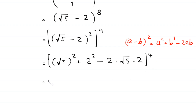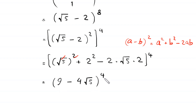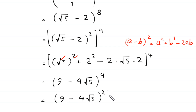Next, root 5 squared gives 5, and 2 squared gives 4, so 5 plus 4 equals 9. And 2 times 2 times root 5 gives 4 root 5. So the expression becomes 9 minus 4 root 5, whole to the power 4. This can be rewritten as 9 minus 4 root 5, whole squared, and whole to the power 2.